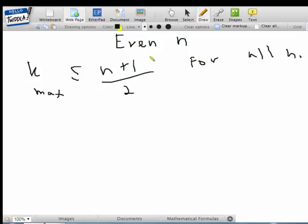And now, if n is even, what is the next possible largest value of k max which is an integer? So that's just going to be n divided by 2, right? It's pretty simple.